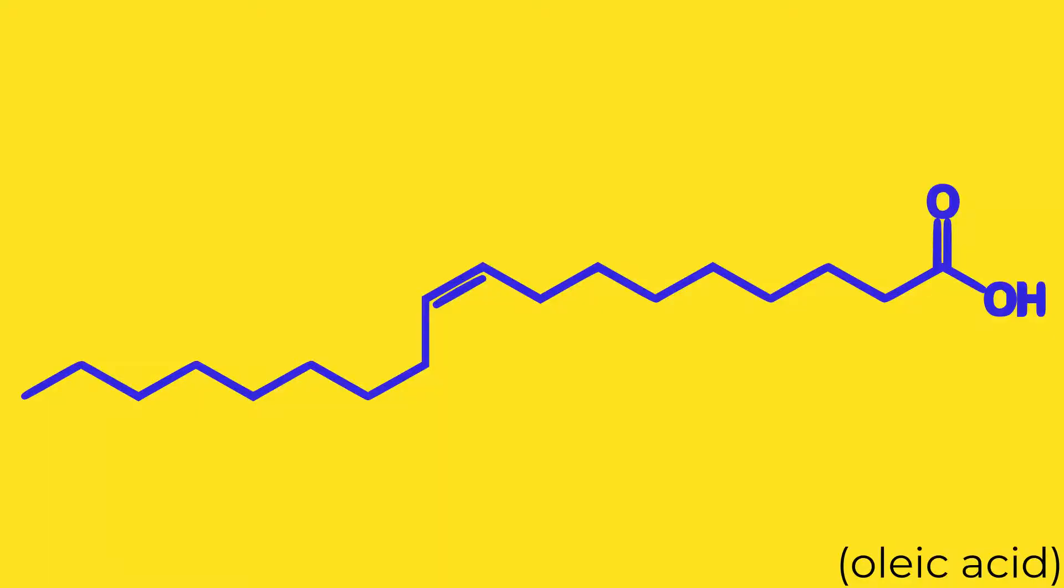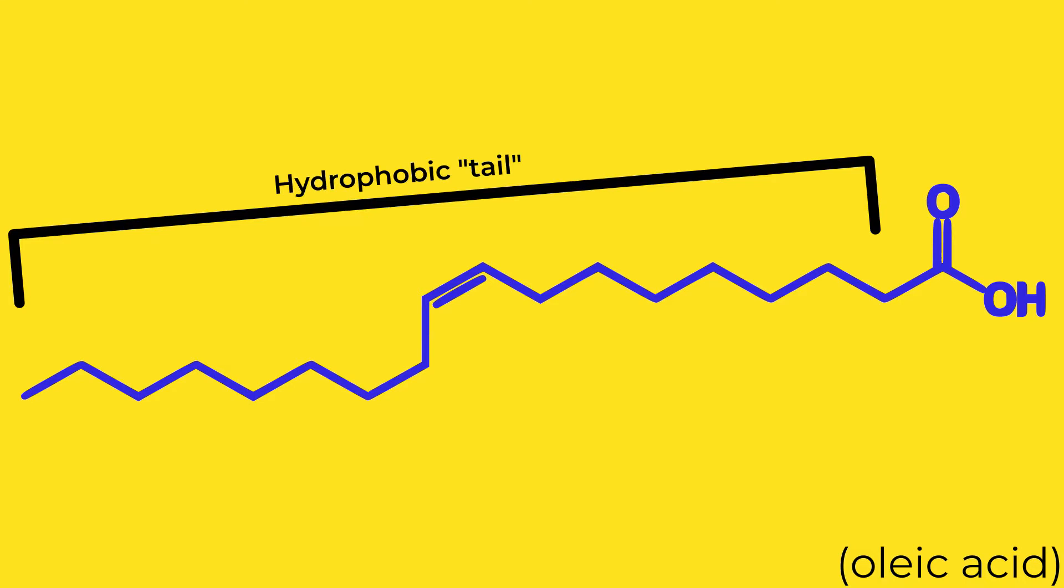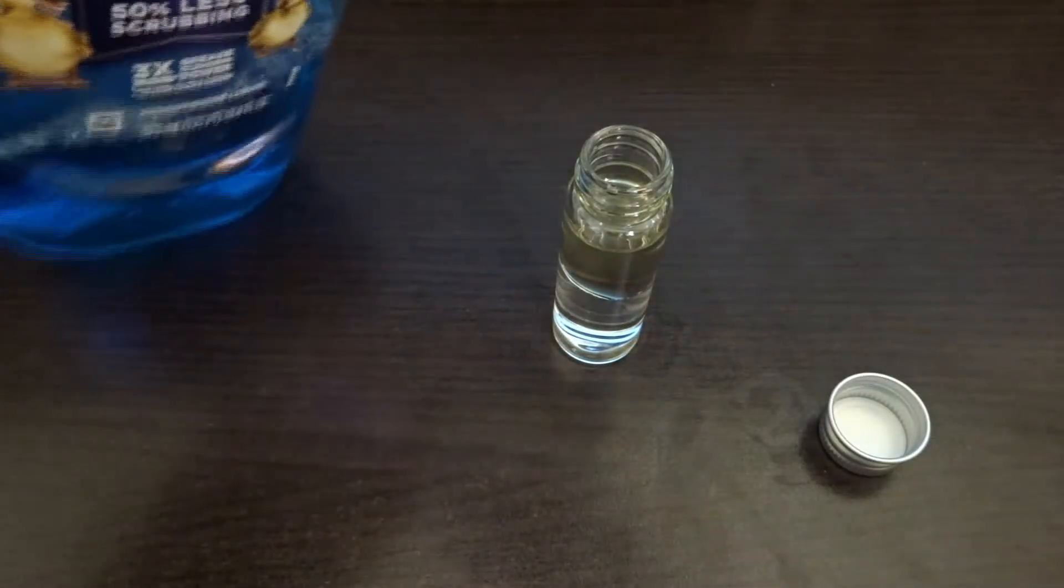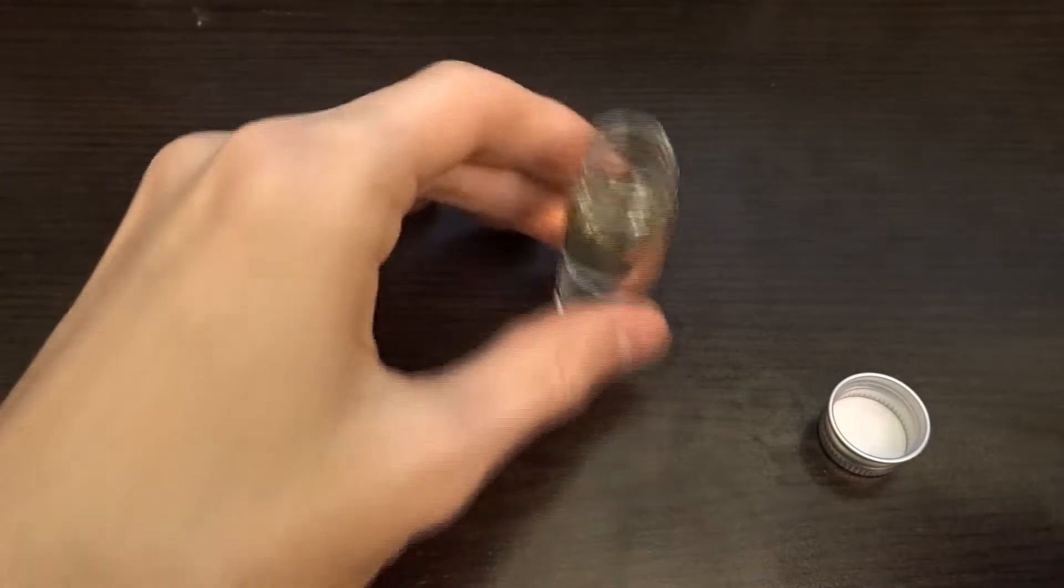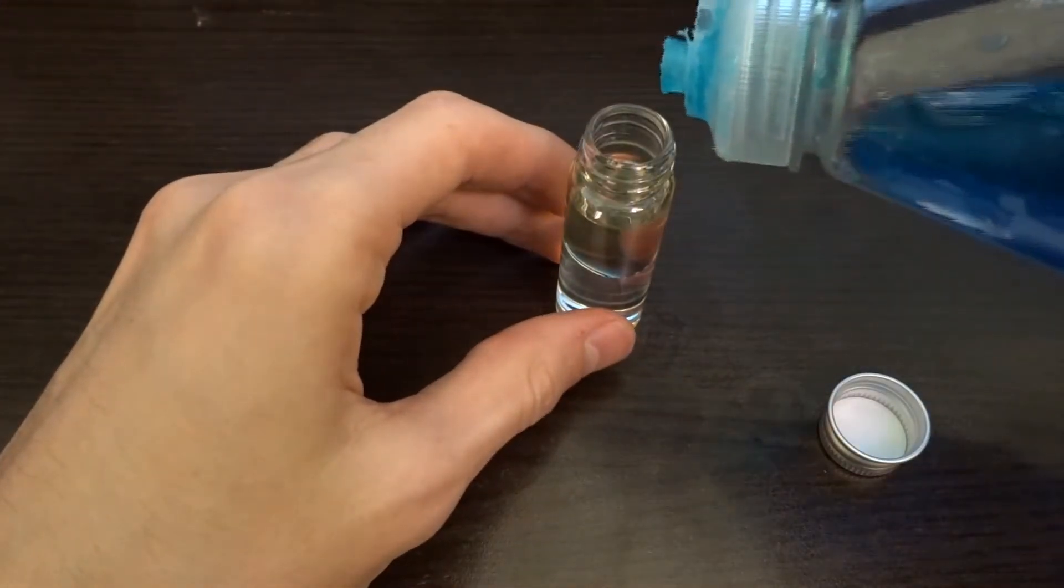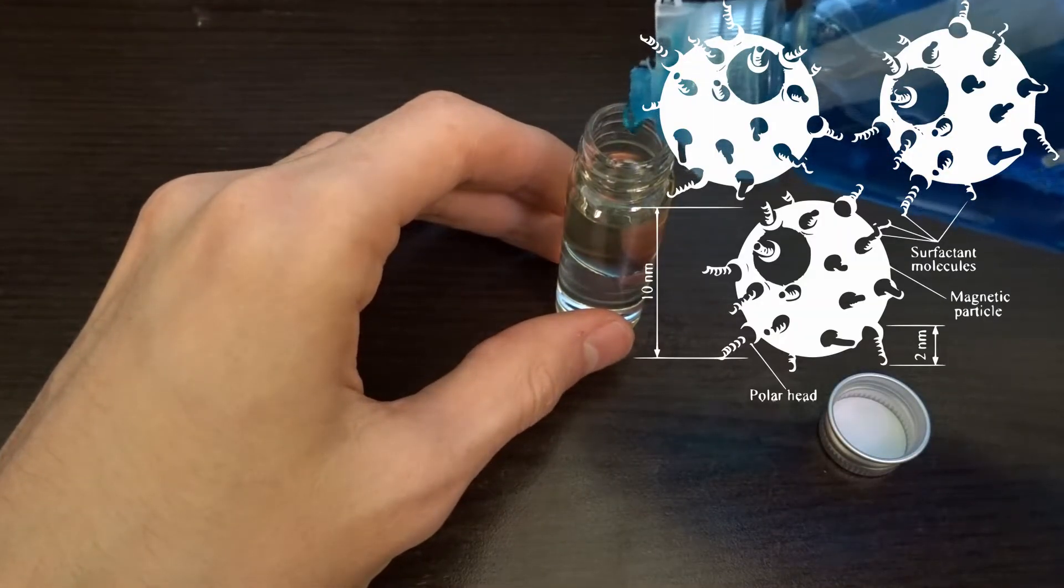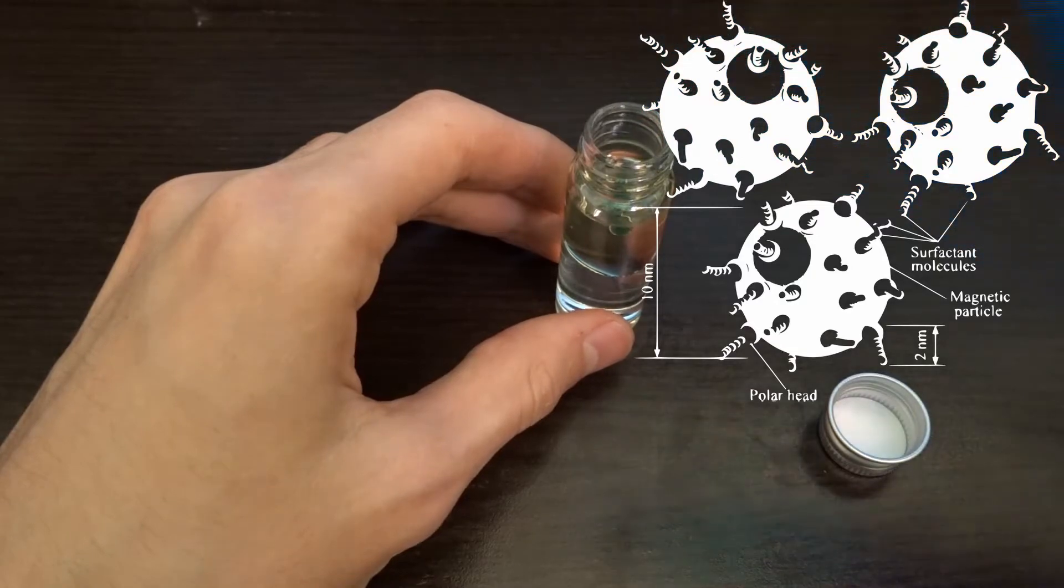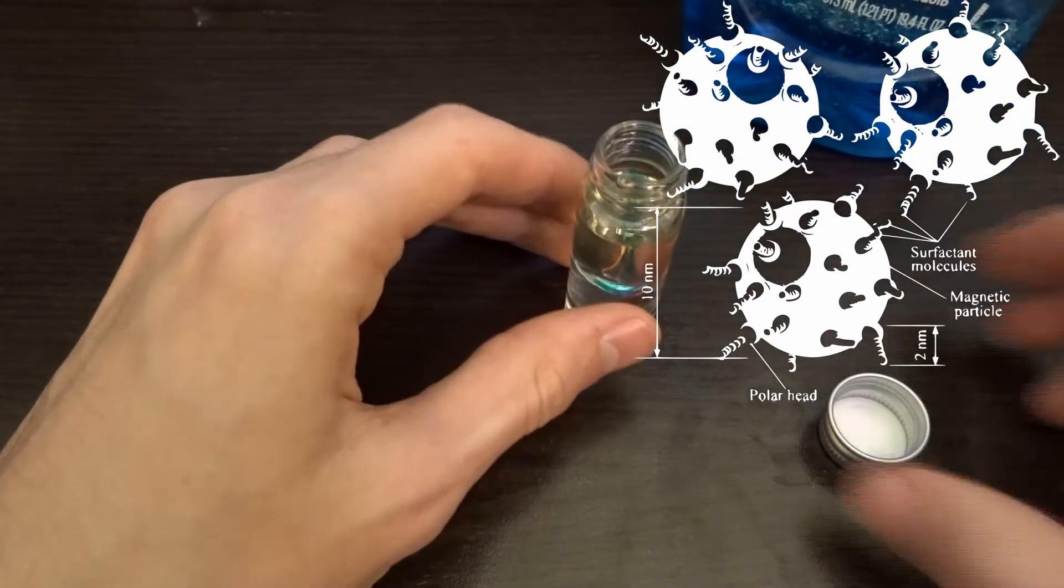Surfactants are a class of molecule that contain both hydrophobic, water avoiding, and hydrophilic, water seeking, groups. Using a similar mechanism as the one that allows soap to make oil miscible in water, the nanoparticles can be made miscible in kerosene. What we need to find is some surfactant that can bond to the outside of the magnetite particles and surround them with a non-polar shell.